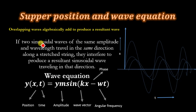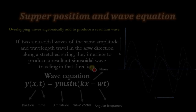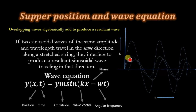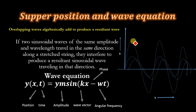If two sinusoidal waves of the same amplitude and the same wavelength travel in the same direction along a straight string, they interfere to produce a resultant sinusoidal wave traveling in that direction. Suppose we have two waves y1 and y2 — these two waves will overlap each other and produce a new wave known as the resultant wave.